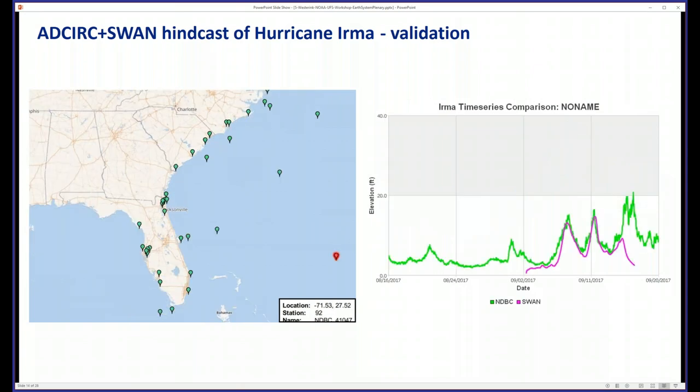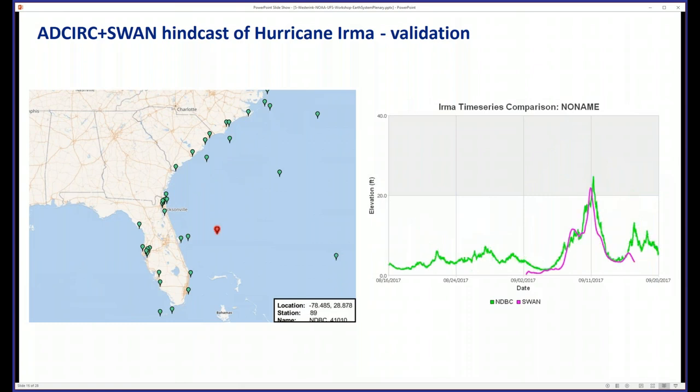Waves are computed very nicely, as shown here with examples from significant wave height. Going inland you can see even better results. Going nearshore, results are consistently good. This is important because wave radiation stresses provide extra forcing for currents as well as setup of coastal waters.